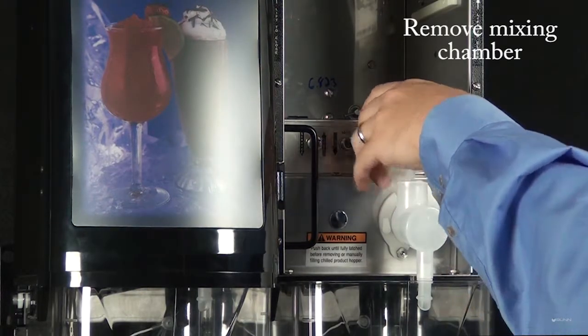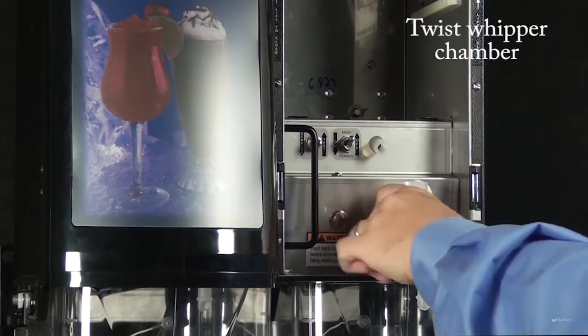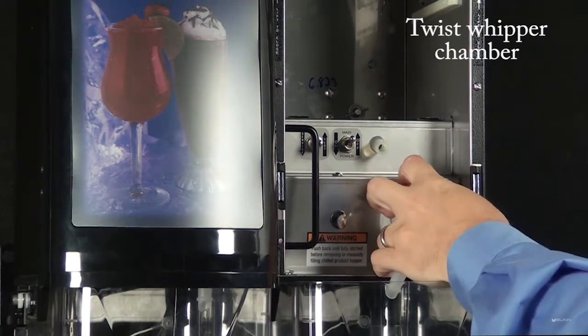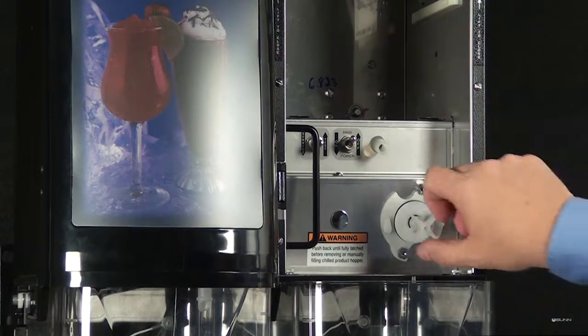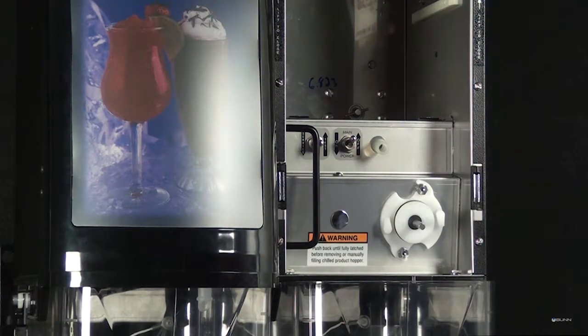Pull the mixing chamber out of the whipper chamber. Twist the whipper chamber clockwise and pull it off the whipper chamber receptacle. Pull the frother off the motor shaft.